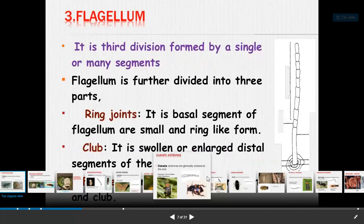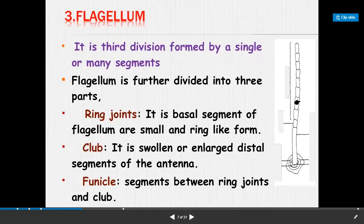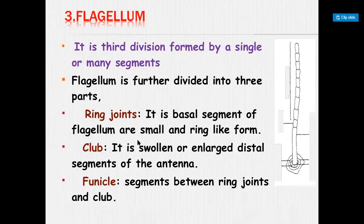The third part is the flagellum, which is formed by a single or many segments. The flagellum is further divided into three parts: first is the ring joint, which is the basal segment of the flagellum and is small and ring-like in form; second is the club, which is an enlarged or swollen large distal segment; and third is the funicle, which lies between the ring joint and the club.